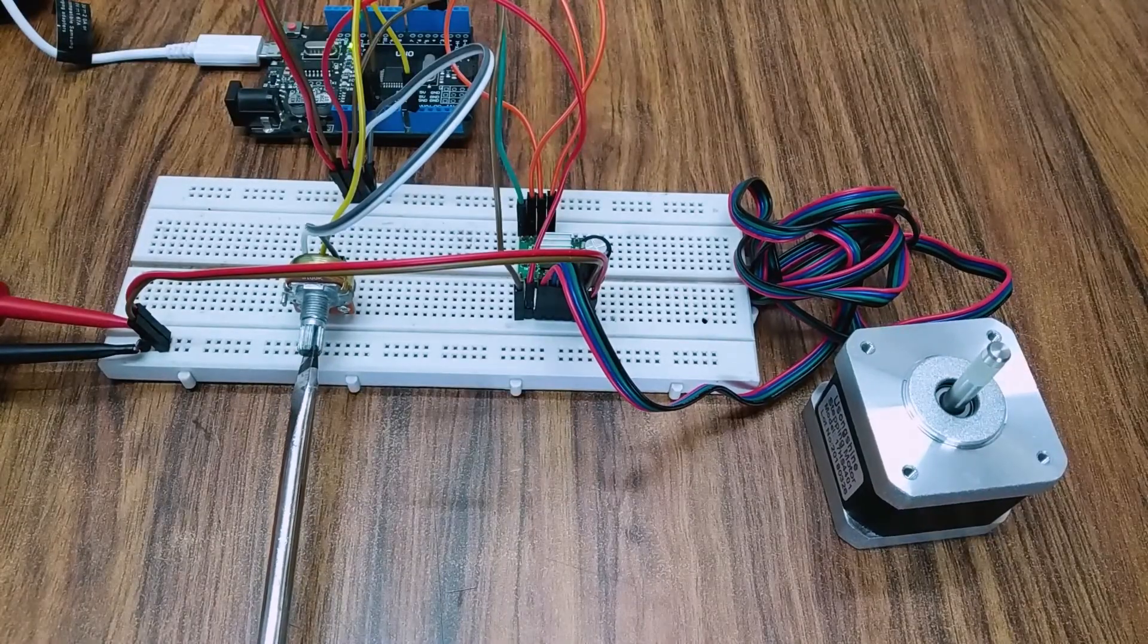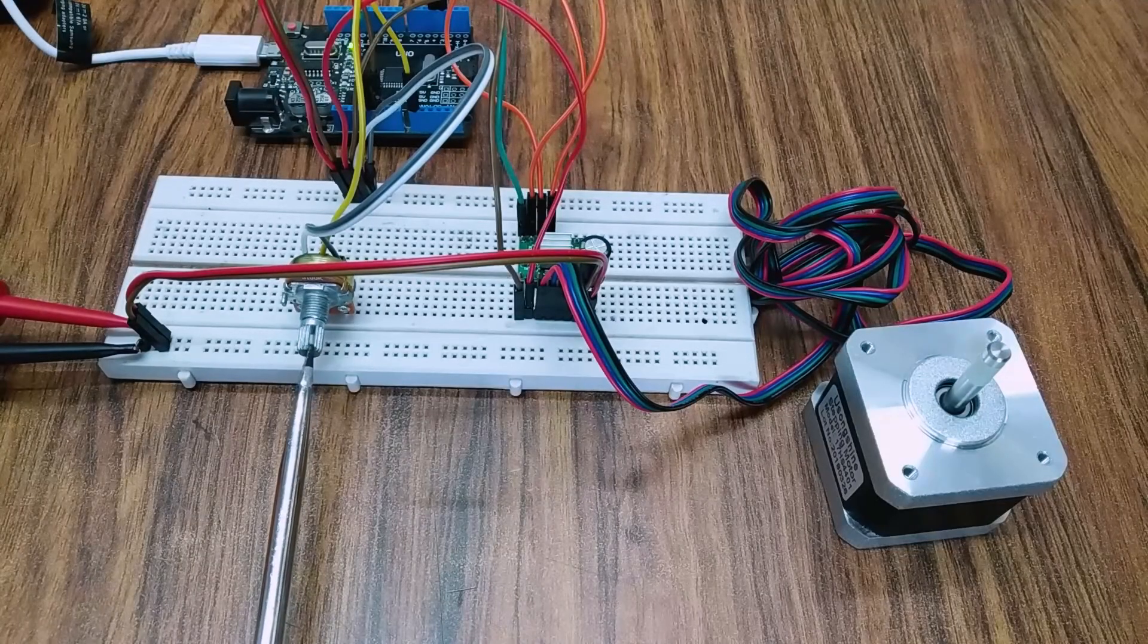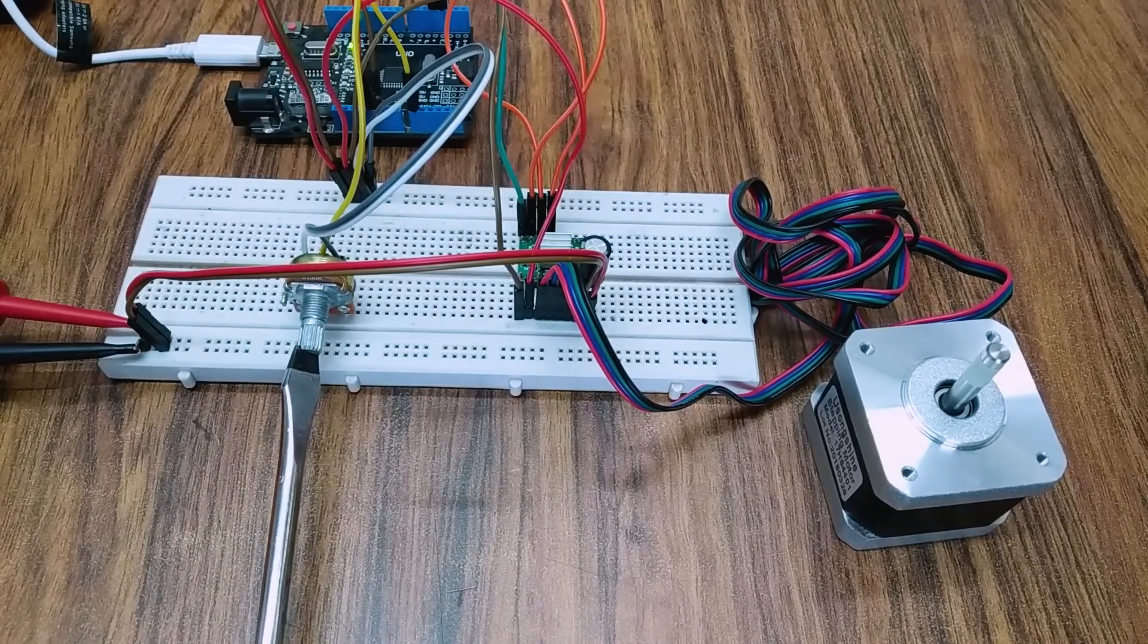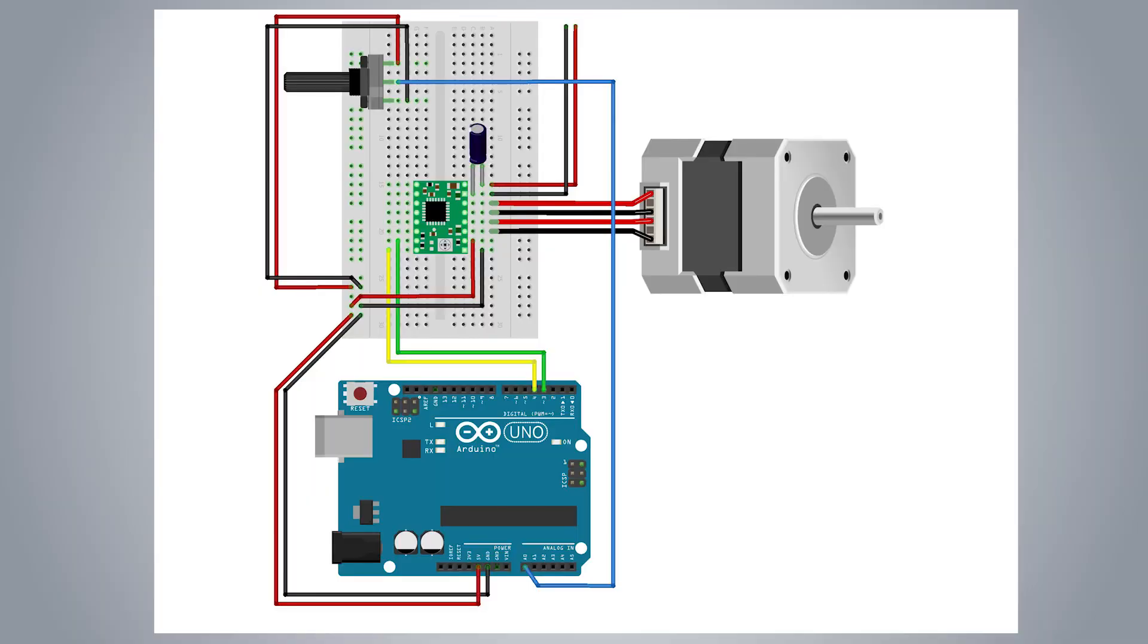I have also written a code to run the motor at various speeds using a potentiometer to adjust the motor speed. You have to connect the potentiometer wiper pin to analog zero pin of the Arduino. And connect 5 volt input to the first pin and ground to the third pin.